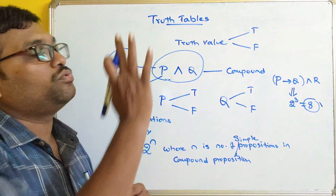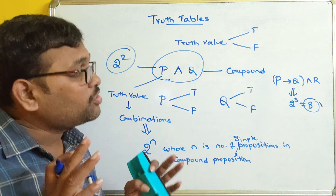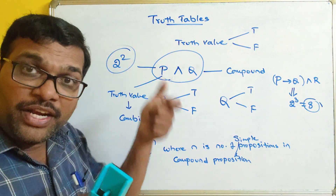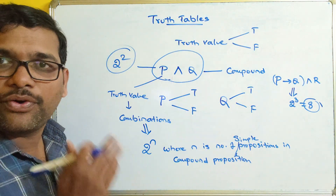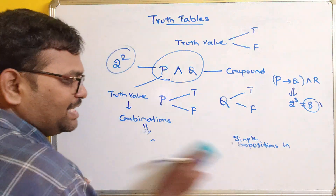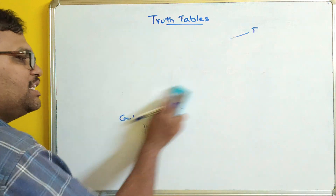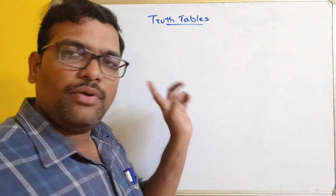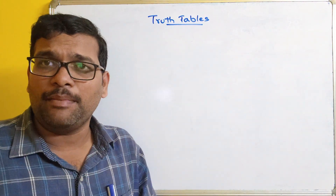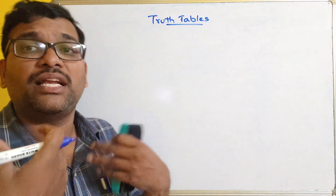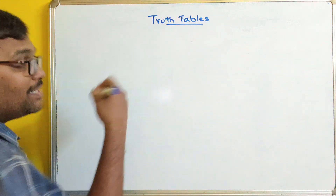Finding the truth values for all the combinations is presented in the form of a truth table. In this session we will see the truth tables for all the connectives. In our next session we will see a few more examples of truth tables, considering compound propositions with two and three combinations.